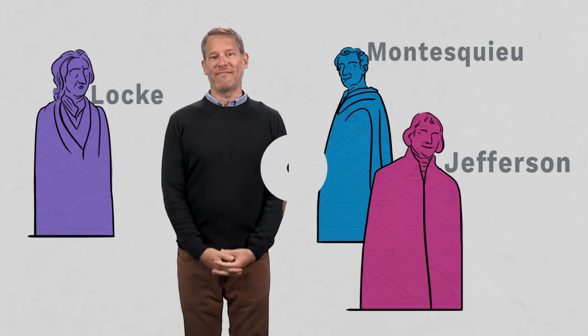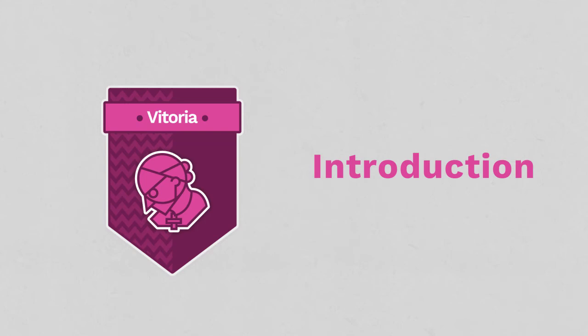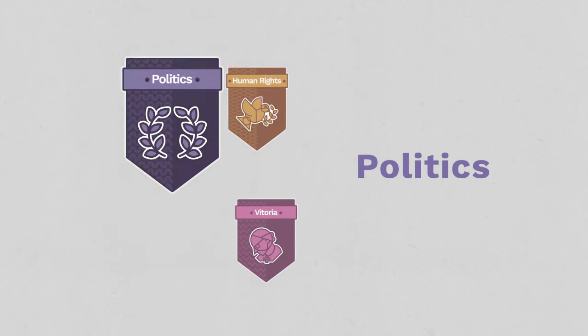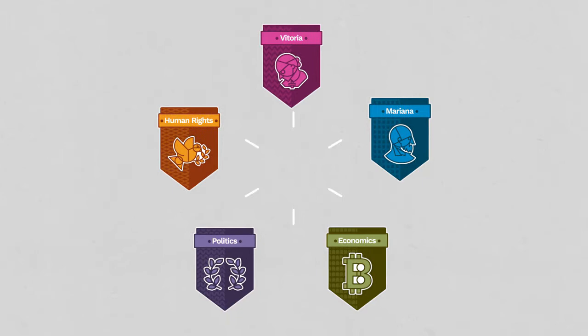The course consists of five chapters: an introduction, a chapter each on the contributions to thinking about human rights, politics, and economics, and a conclusion.